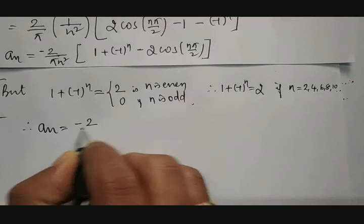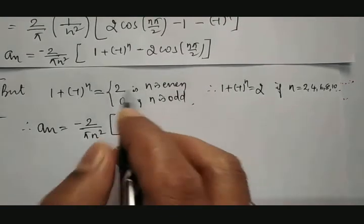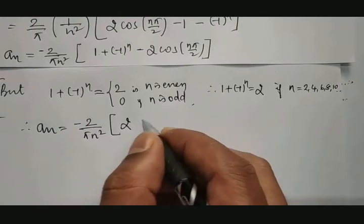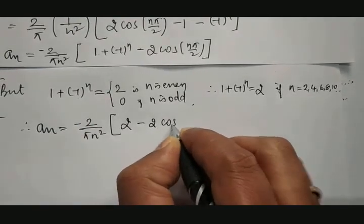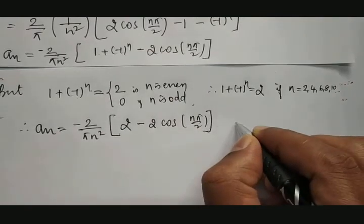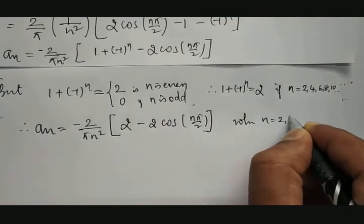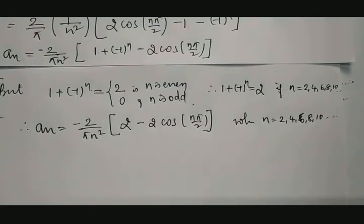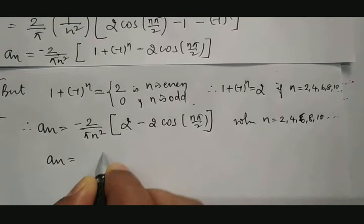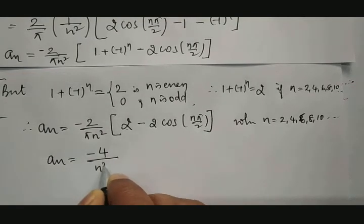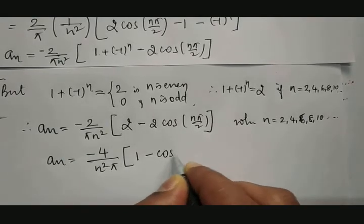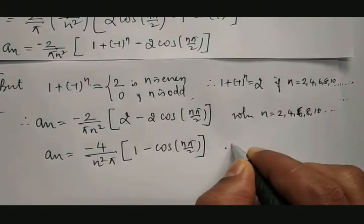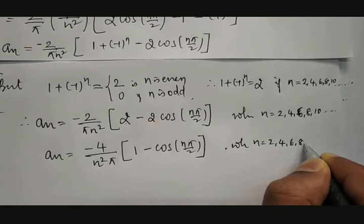So A_n becomes minus 2 divided by pi n square times [2 minus 2 cos(n pi by 2)], where n equals 2, 4, 6, 8, 10, and so on. Taking 2 common: A_n equals minus 4 divided by n square pi times [1 minus cos(n pi by 2)], where n equals 2, 4, 6, 8, and so on.